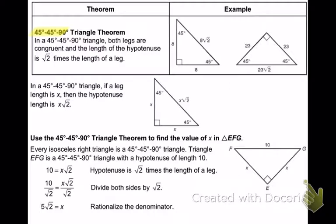In a right isosceles triangle, isosceles means that two sides are the same. This is the unique property: both legs are congruent, and the length of the hypotenuse is the square root of 2 times the length of the leg. For instance, if my legs are 8, my hypotenuse is going to be 8 square root of 2.